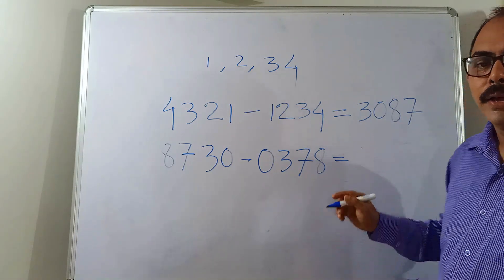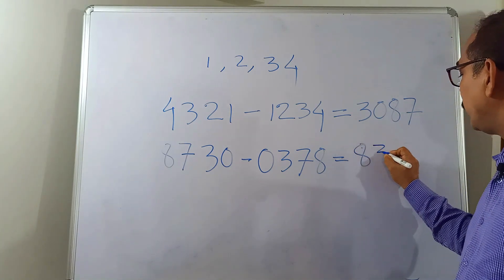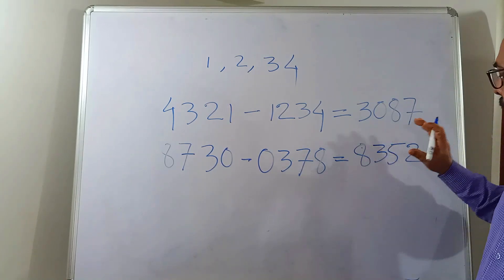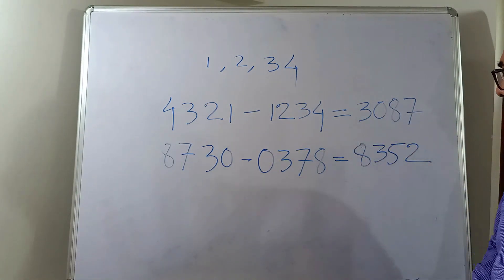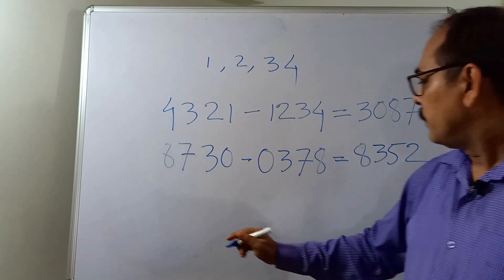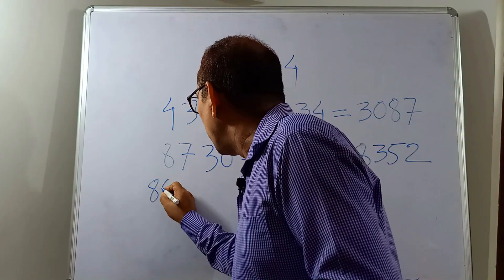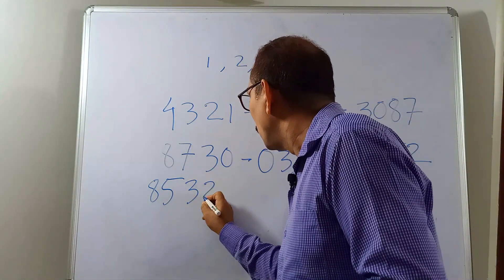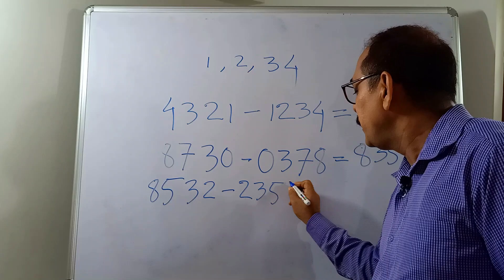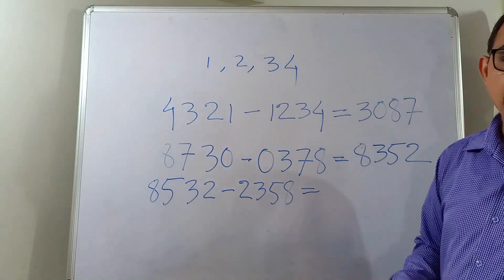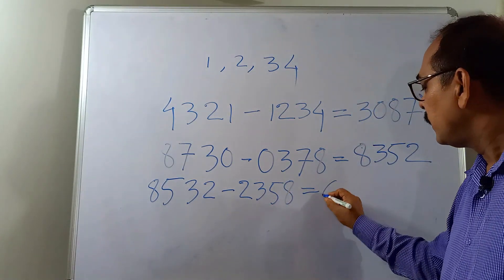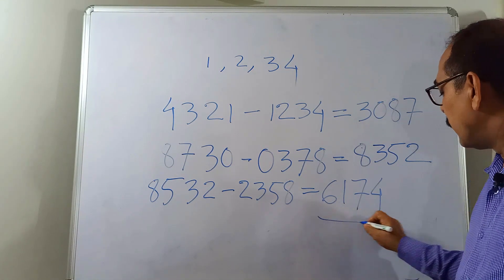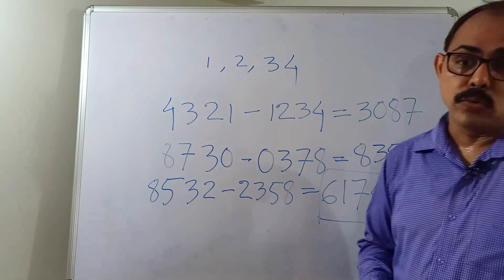The result is 8352. Using the digits of 8352, in the third step we write the largest number 8532 minus the smallest 2358, and the final result comes again to 6174 — that is the Kaprekar constant.